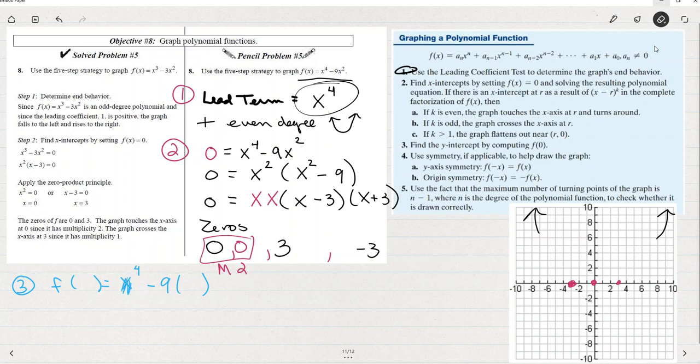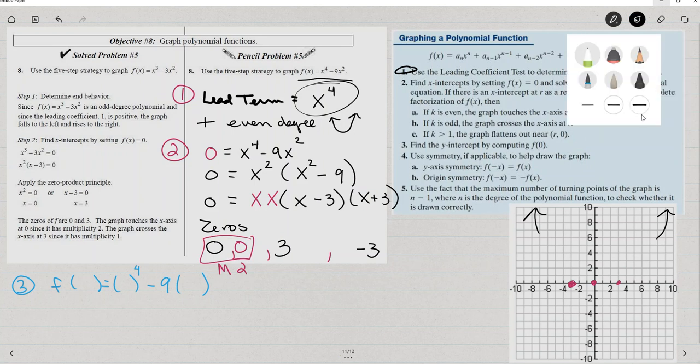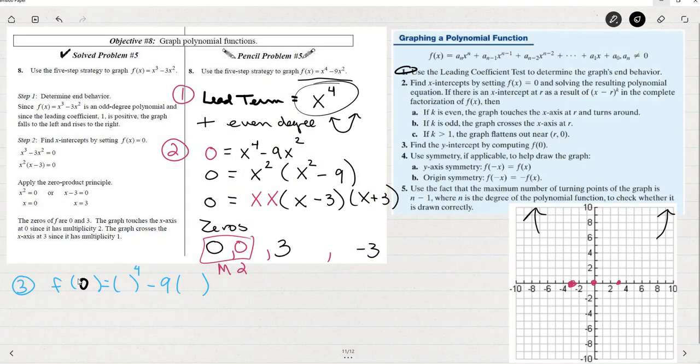then I can go back in to the x and replace it with zero. To find f of zero is zero to the fourth minus nine times zero.